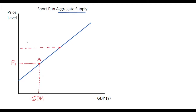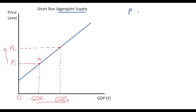What this line tells us is that as the price level increases in the economy — say we go up to P2 — the GDP level tends to respond positively, so GDP tends to increase as well, moving further to the right away from the origin. So why would this be the case? This is because actual output deviates from potential output in the short run due to what we call price and wage rigidities.